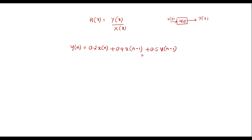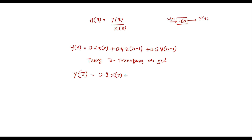We should take the Z-transform of this equation. Taking the Z-transform, we get: Y(z) = 0.2·X(z) plus 0.4·z⁻¹·X(z) plus 0.5·z⁻¹·Y(z), since the Z-transform of x(n-1) is z⁻¹·X(z) and the Z-transform of y(n-1) is z⁻¹·Y(z).